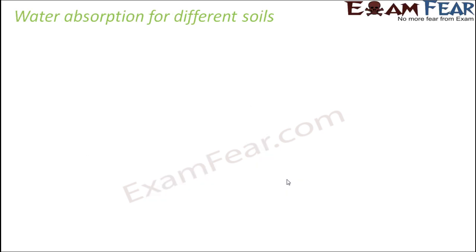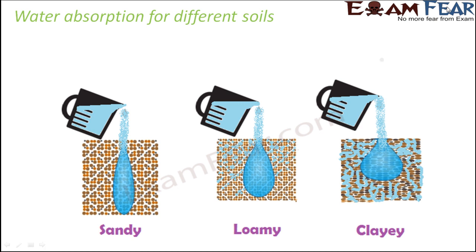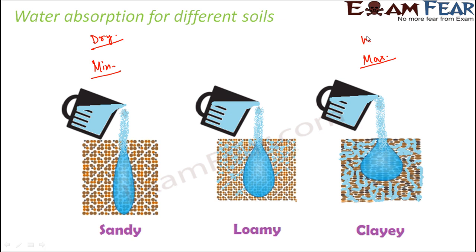The next soil property is water absorption. If we compare sandy, loamy, and clayey soils, water absorption is the opposite of percolation rate. Water absorption is maximum in clayey soil because it holds more water, so soil particles absorb more. It is minimum in sandy soil because water quickly drains through the spaces and the particles hold nothing. This is why sandy soils are very dry while clay soils are very wet, with loamy soils being intermediate.